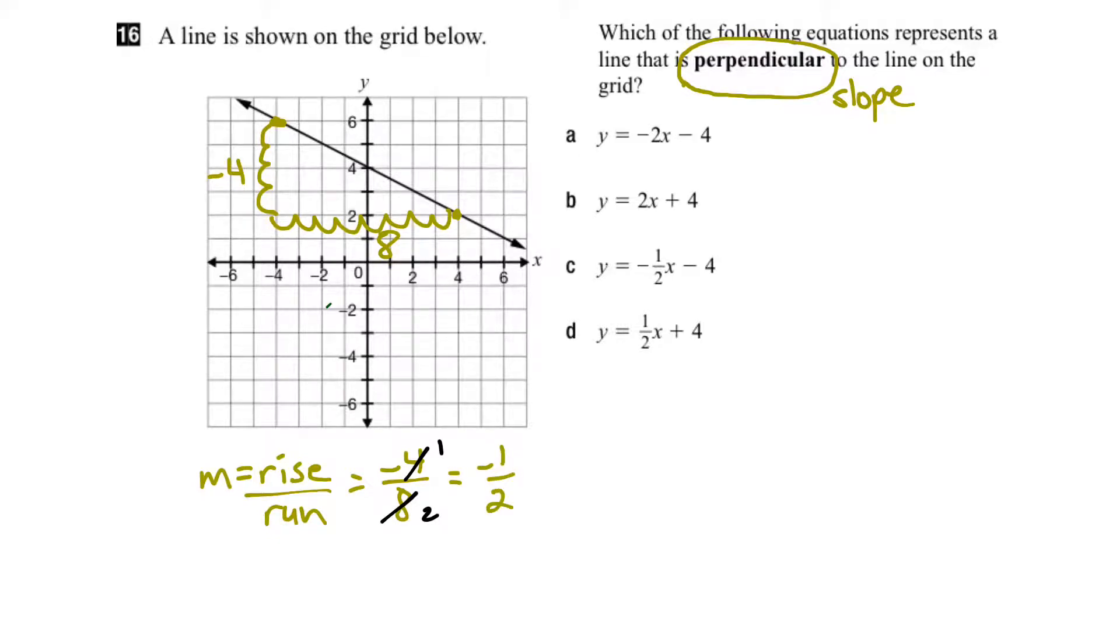And we can just kind of in our mind verify that we've got the right answer for the slope of this line, because it's a slope going down to the right, which means it's a negative slope. And it's rather shallow, so it's not a steep slope, so that makes sense that it would be about negative 1 half.